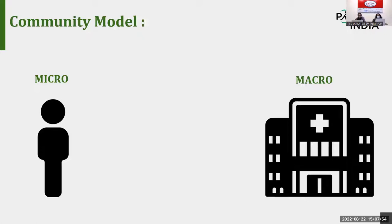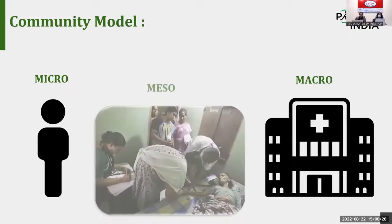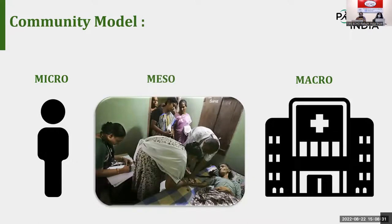Now coming to the community model — the third category. Here you can see two units: micro and macro. The community concept comes into picture where the micro component is not accessible to palliative care delivery services. The miso component then comes into picture, where volunteers help the delivery reach from the macro element to the micro element.